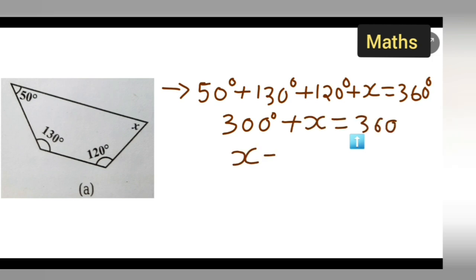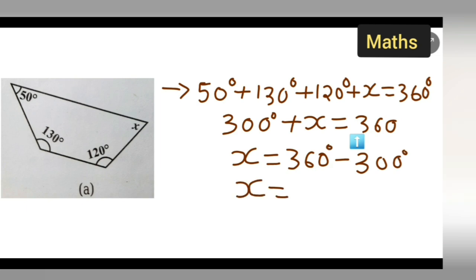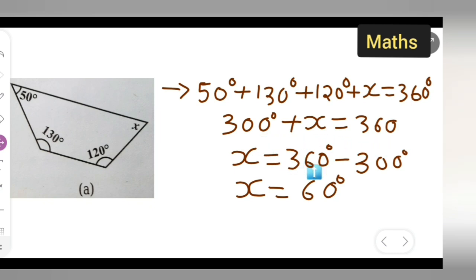So x is equal to 360 minus 300. We bring 300 to the other side, so the sign changes to minus. Therefore, 360 minus 300 equals 60. The value of x is 60°.